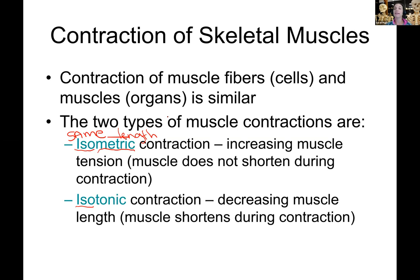Isotonic means you have tension on the muscle and you are changing the length. So an isotonic contraction would be like doing your crunches up and down, or squats up and down — there's tension on the muscle and it's constantly changing length.